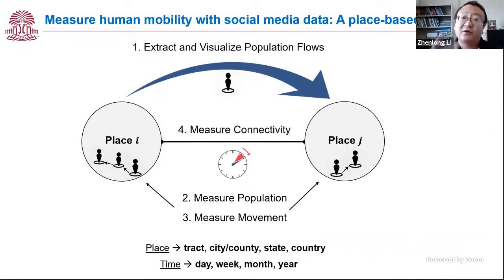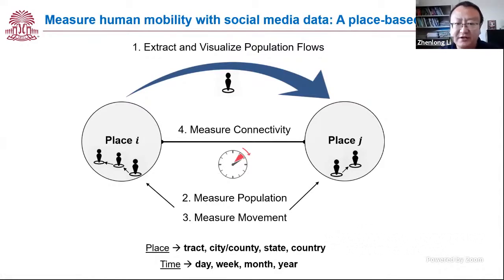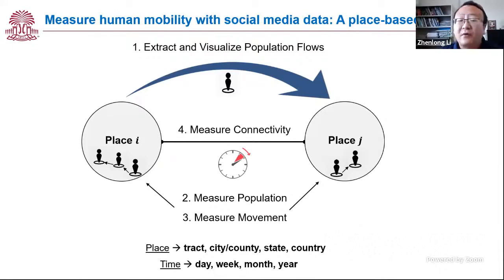We can start by looking at those population flows. Since we are interested in geotagged Twitter data — data that has location information — we can first extract and identify the population flows, giving us an overall view of how the flows change. Then we can further measure the movement, for example, the average movement distances in a county during a specific day, and measure the connectivity between places. These measurements form a place and time framework.